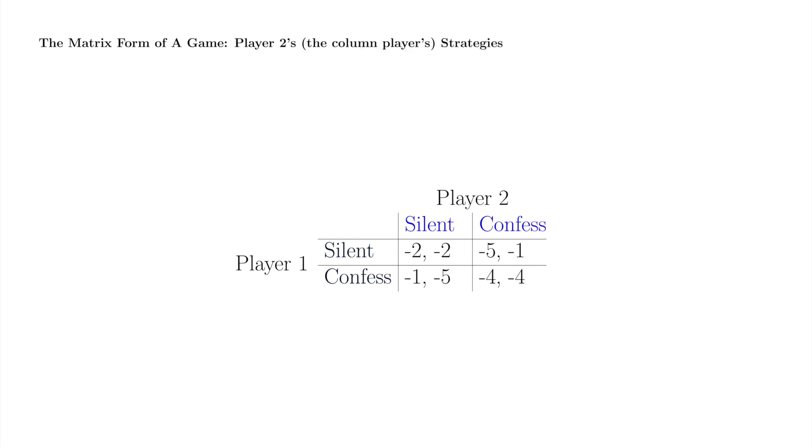Player 2 strategies are labeled in blue here. Each entry of the topmost column of the matrix represents a strategy belonging to the player named above the matrix. Player 2 is also called the column player since her choice of strategy selects a column of the matrix.